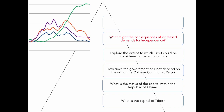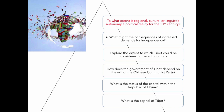The next level is analysis — for example: 'Explore the extent to which Tibet could be considered to be autonomous.' You're beginning to need a different set of intellectual skills to explore this sort of issue. It's not simply having knowledge about Tibet; it's having knowledge about notions of autonomy and the extent to which information about the social, economic and political circumstances in the country can contribute towards that particular issue.